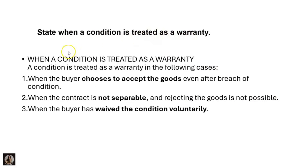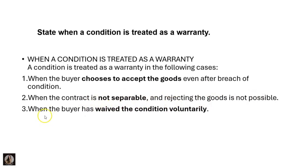When is a condition treated as a warranty? A condition is treated as a warranty in the following cases: when the buyer chooses to accept the goods even after a breach of condition; when the contract is not separable and rejecting the goods is not possible; and when the buyer has waived the condition voluntarily.